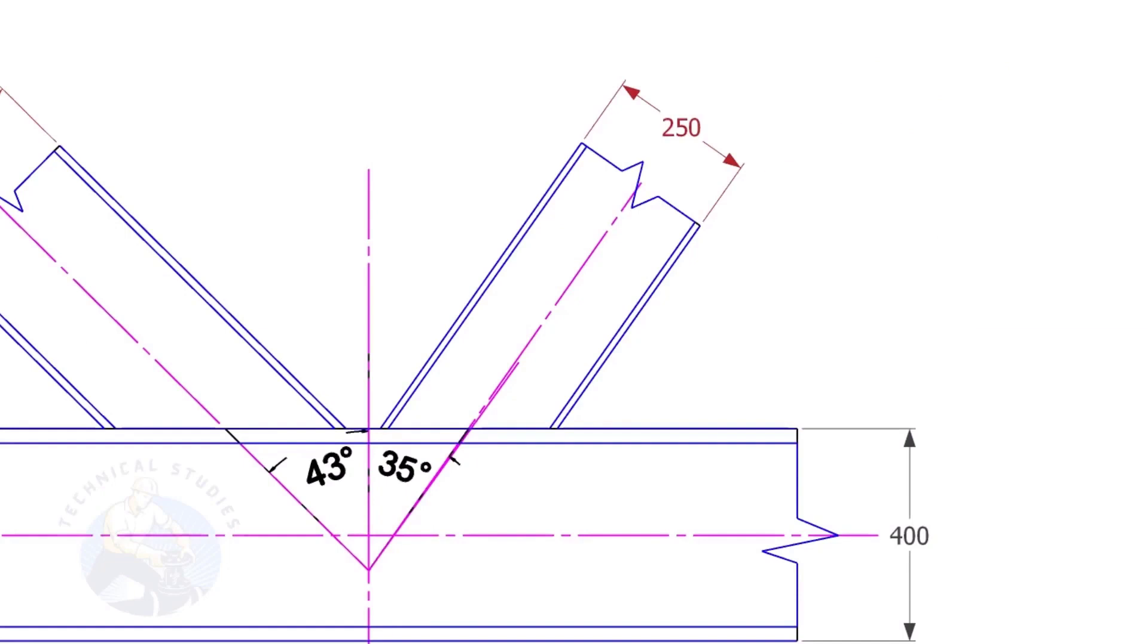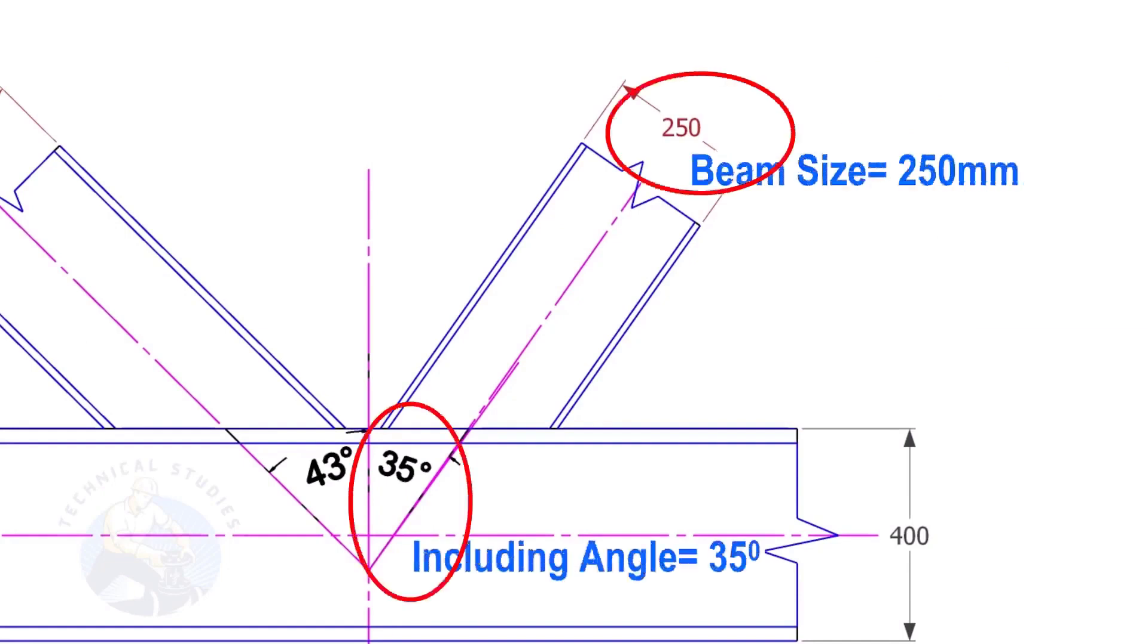Here, the size of the beam is 250, and the including angle is 35. Let us calculate the cutback.